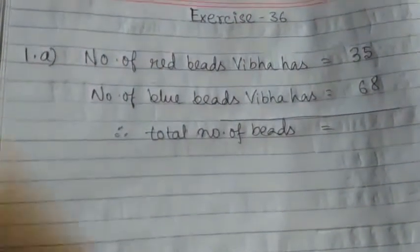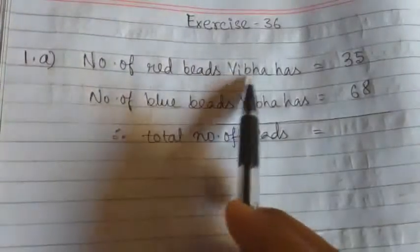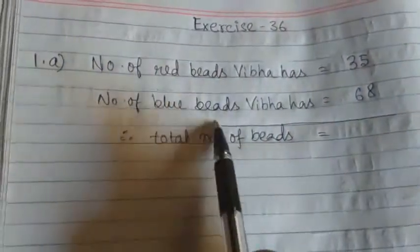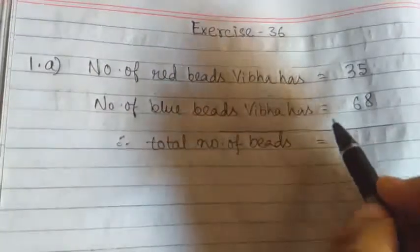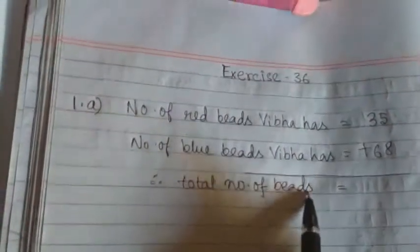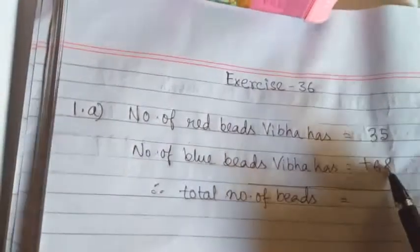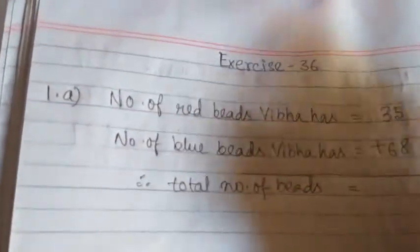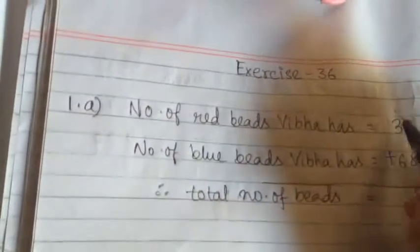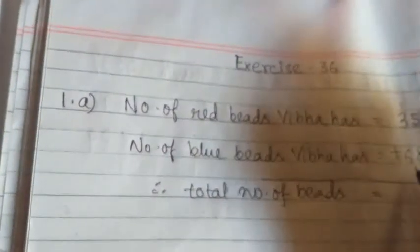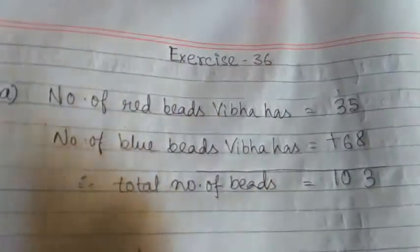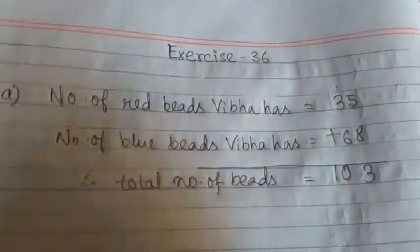The number of red beads Viva has is equal to 35. Number of blue beads Viva has is equal to 68. Then we will add: 8 plus 5 is 13. Write 3 here, 1 carry. 1 plus 3 is 4, 4 plus 6 is 10. So Viva has 103 beads.